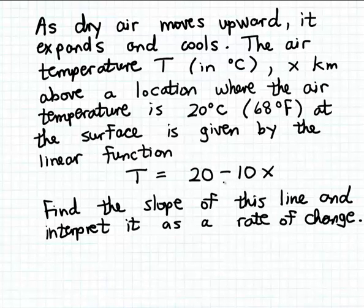But the slope is minus 10 because that's the coefficient of the input variable x. And so we can write that down. Slope, which is usually denoted by the variable m is minus 10. Be careful now that you include the sign because that's important as part of the interpretation of the slope.